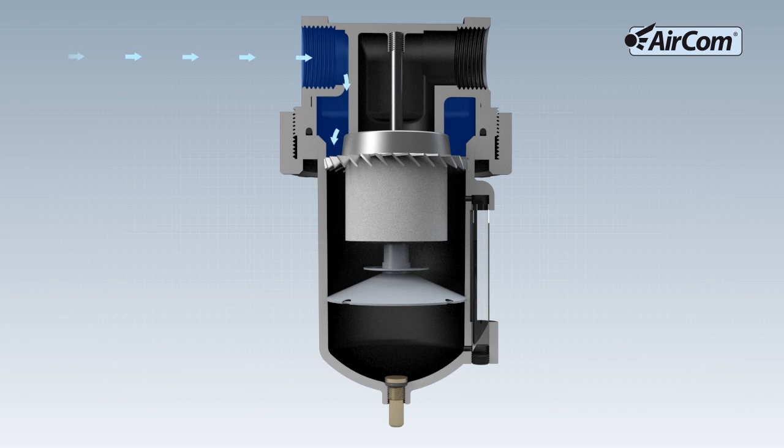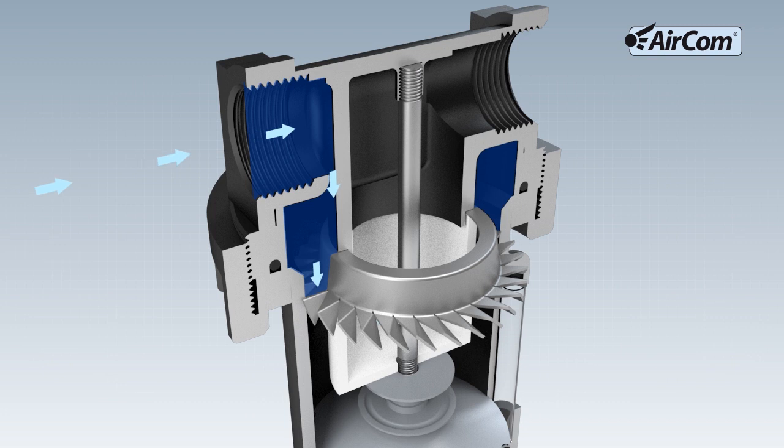Air flows into the filter through the inlet hole. The air is brought into rotation by the canted wings of the twist cap. This rotation, also referred to as cyclone effect,